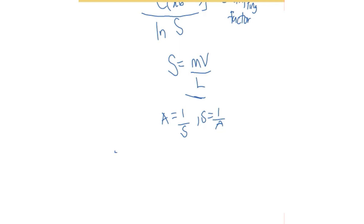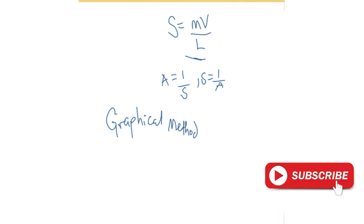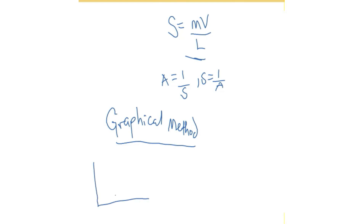Now let's move to the graphical method. The graphical method is easy, just like the Kremser equation. We are going to draw a graph with an X axis and a Y axis.